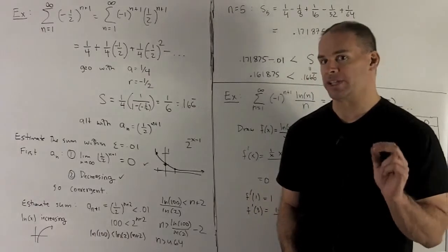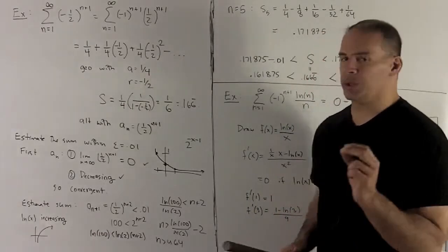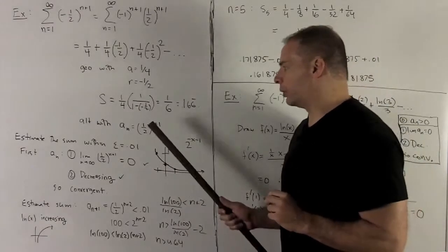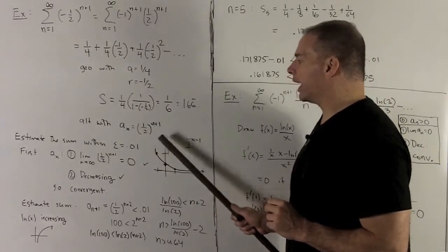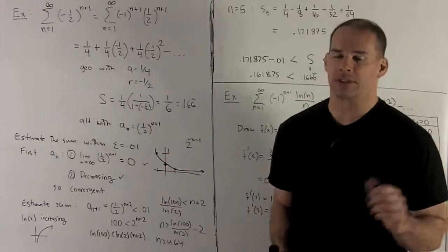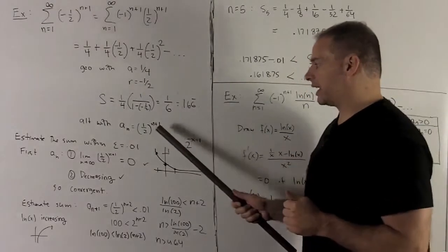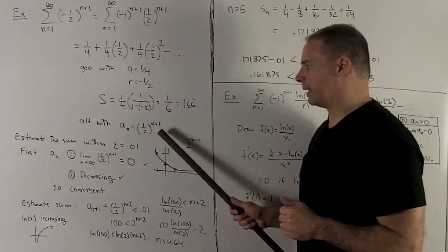The first thing we'll need to do is to show that it's convergent. So I'll need to do three things actually. The first one is to note that a sub n is always a positive number. That's the first thing you need to check for your alternating series test. So that's taken care of. These things can never become negative.